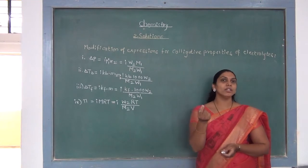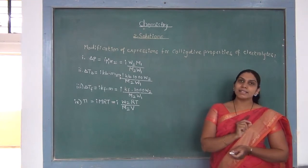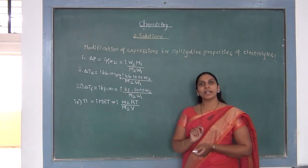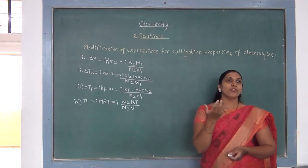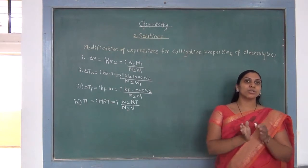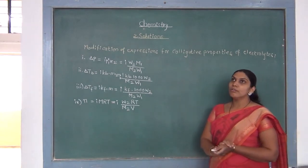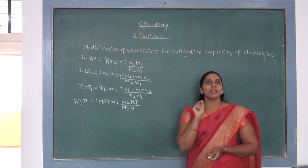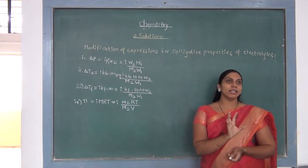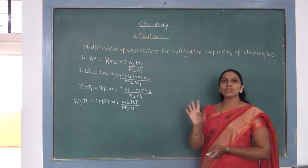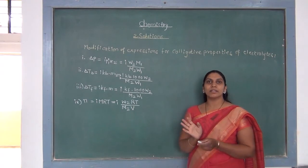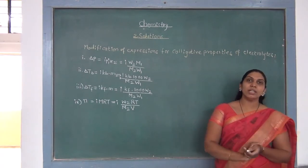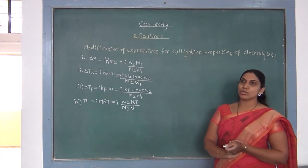Remember that the Van't Hoff factor for NaCl is 2, for KNO3 the Van't Hoff factor is also 2, and for CaCl2 the Van't Hoff factor is 4. These values of the Van't Hoff factor are applicable only to dilute solutions.